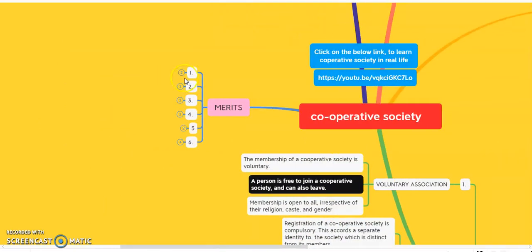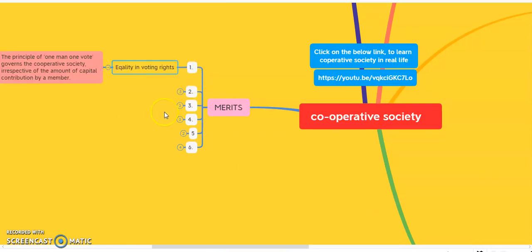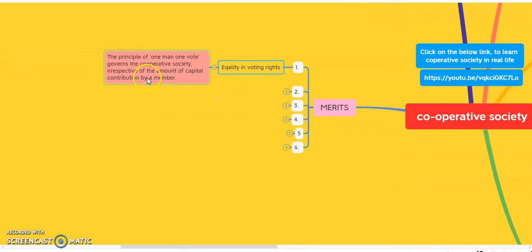Now we will discuss some merits of the cooperative society. The first merit is equality in voting rights. The principle of one man, one vote governs the cooperative society, irrespective of the amount of capital contributed by the members. Every person has a voting right in the cooperative society, whether they contributed more or less. Thus there is equality in the voting right.